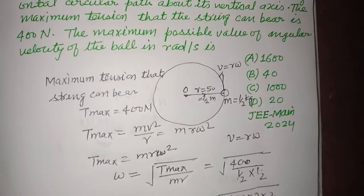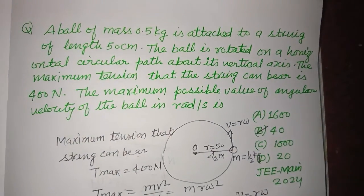So omega is 40 radian per second, which is given in option B. Therefore option B is correct.